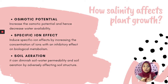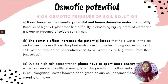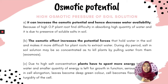I will now explain how salinity affects plants. There are three effects: osmotic potential, specific ion effects, and salt aggregation. The first is osmotic potential, which causes high osmotic pressure of the soil solution. This is due to the presence of soluble salts such as calcium, sodium, or magnesium in the soil. The presence of soluble salts increases osmotic potential and hence decreases water availability, because roots find difficulty absorbing a high quantity of water.